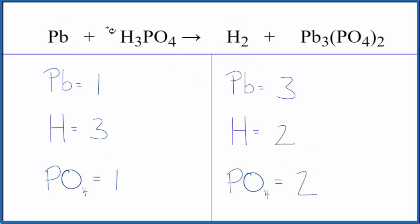If we put a two here, now we have one phosphate times the two, so that balances the phosphates. Easy, right?